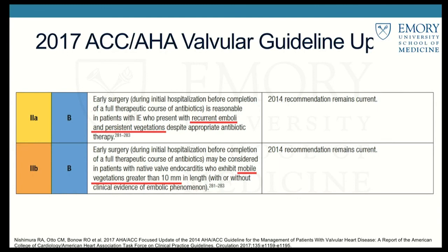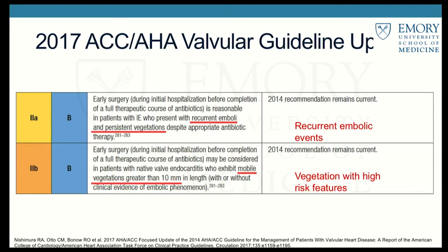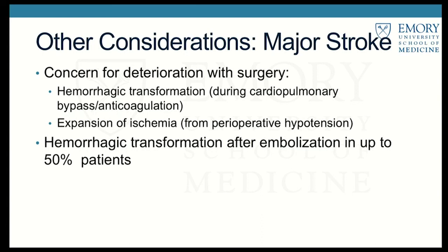Guidelines say for patients with recurrent emboli and persistent vegetations, it's reasonable to consider surgery. For vegetations with high-risk features such as hypermobility or greater than 10mm, early surgery may be considered. The concern with major stroke and surgery is hemorrhagic transformation — up to 50% of strokes undergo hemorrhagic transformation — and perioperative hypotension expanding ischemia. This is why some patients with stroke do not go for surgery.